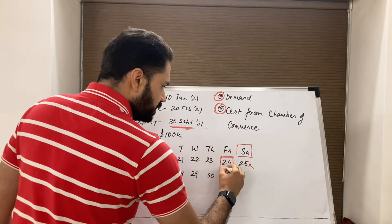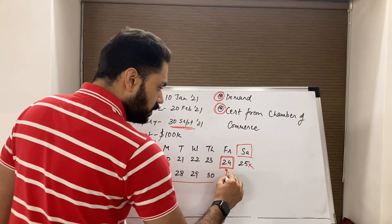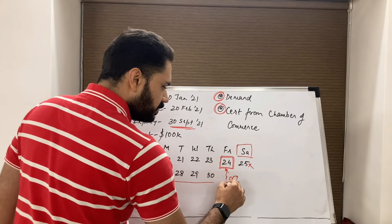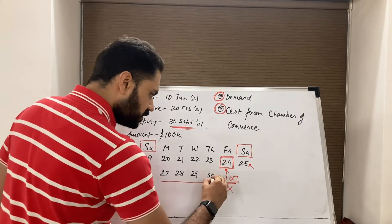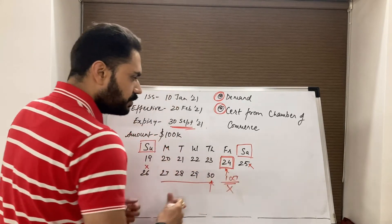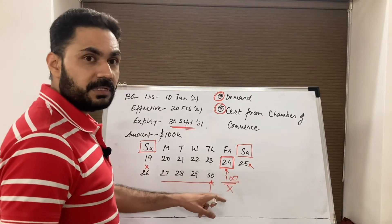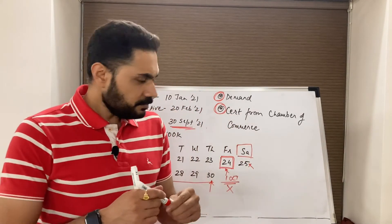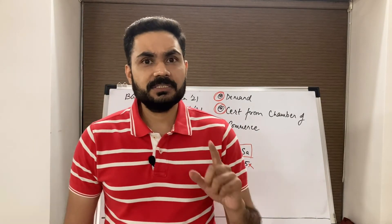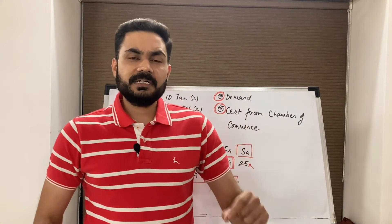Suppose the beneficiary presented a certificate on the 24th but did nothing further until the 30th. On 1st October the guarantee expires. The beneficiary cannot come on 1st October and say that since they presented a document on the 24th and no notice of refusal was given, payment must be made. If the beneficiary has made only a partial presentation and told the guarantor it will be completed in due course, the guarantor is not liable to check unless the beneficiary explicitly confirms the presentation is complete.